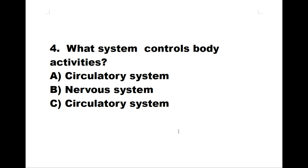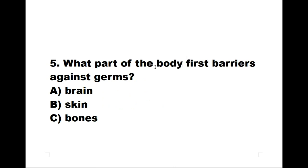Number five: what part of the body is the first barrier against germs? A: brain. B: skin. C: bones. The correct answer is skin.